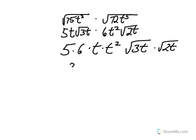We complete this by multiplying: 5 times 6 is 30, t times t squared is t cubed, and the square root of 3t times the square root of 2t is the square root of 6t squared.